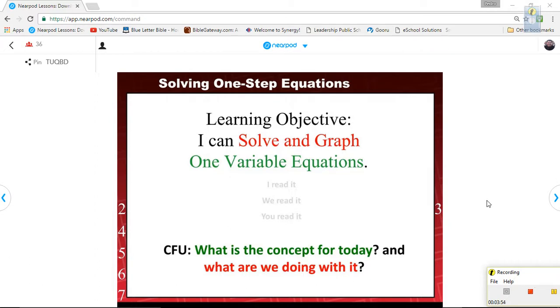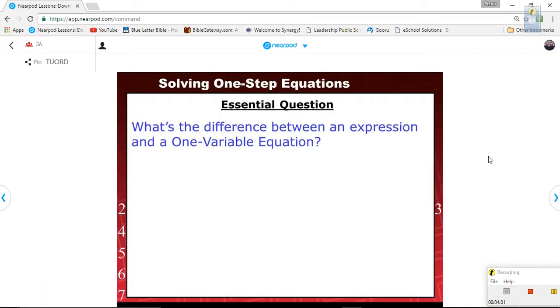I can solve and graph one variable equations. So, we do not need a Frayer model because we already know what one variable equations are. Question really quick. We have an essential question I want you to talk about with your neighbor. It says, what's the difference between an expression and a one-variable equation? Talk it over, please.